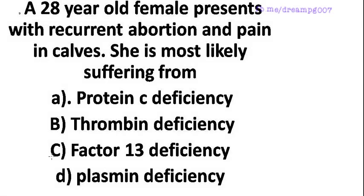A 28-year-old female presents with recurrent abortion and pain in calf muscles. She is most likely suffering from: option A, Protein C deficiency; option B, thrombin deficiency; option C, factor 13 deficiency; option D, plasmin deficiency.